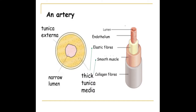In an artery, we have a very narrow lumen because it has a very thick tunica media, made up of elastic fibres and smooth muscle. The heart generates the high pressure within the blood flowing into the arteries due to the contraction of the ventricles. That high pressure is maintained by the elastic fibres — they stretch and recoil back to their original shape. The smooth muscle can contract to monitor and control the blood flow in the arteries.